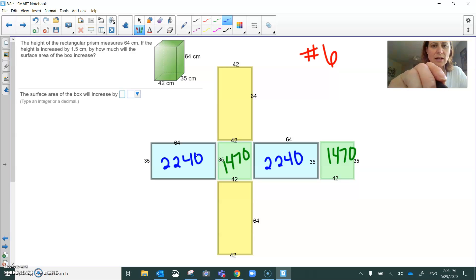The yellow sections are both 42 by 64 which is 2,688 square centimeters. And our next step is to add all six of those areas together and that will give us the surface area.